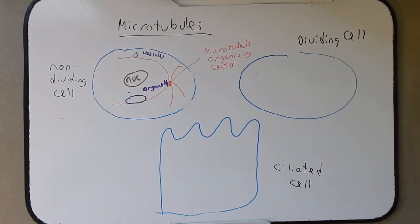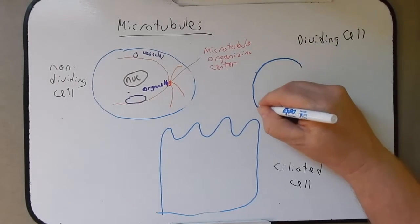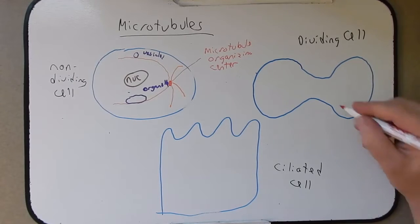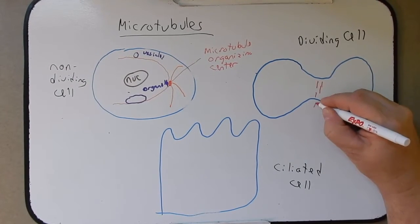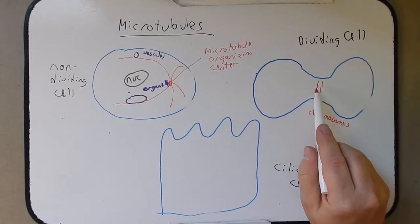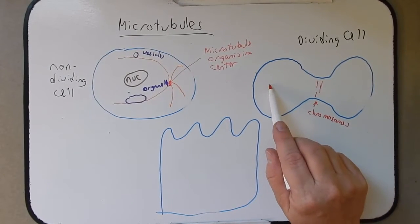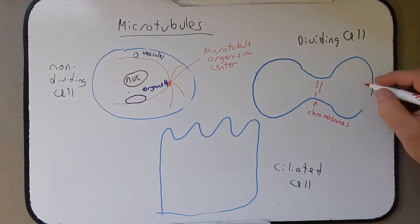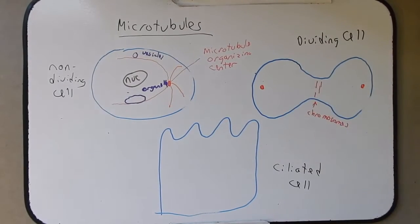Now let's look at this dividing cell. As this cell is dividing, we have chromosomes here, and we need a mechanism to bring an equal amount of chromosomes from the middle to each end of the dividing cell. And that's achieved by these microtubule organizing centers.